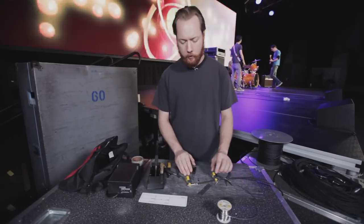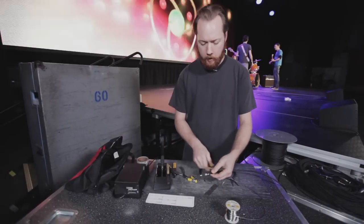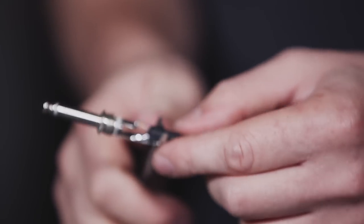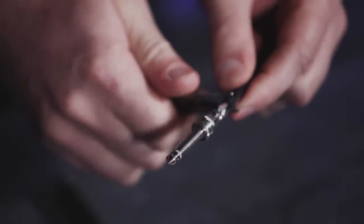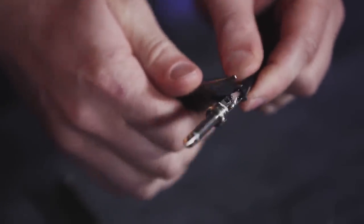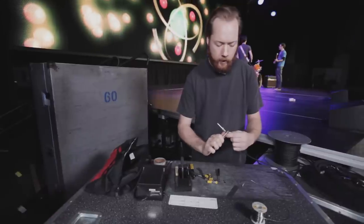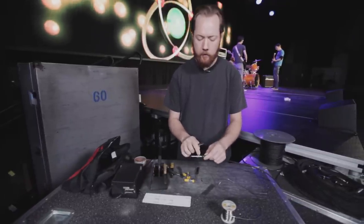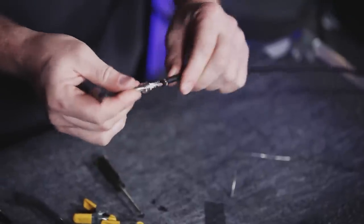Once the solder is cooled, go ahead and crimp the strain relief teeth that you find on the very end of the connector. The strain relief is very important because if the cable gets tugged, and it will, then all of that stress is transferred into these two teeth here instead of into the solder points and the cable will last a little bit longer.